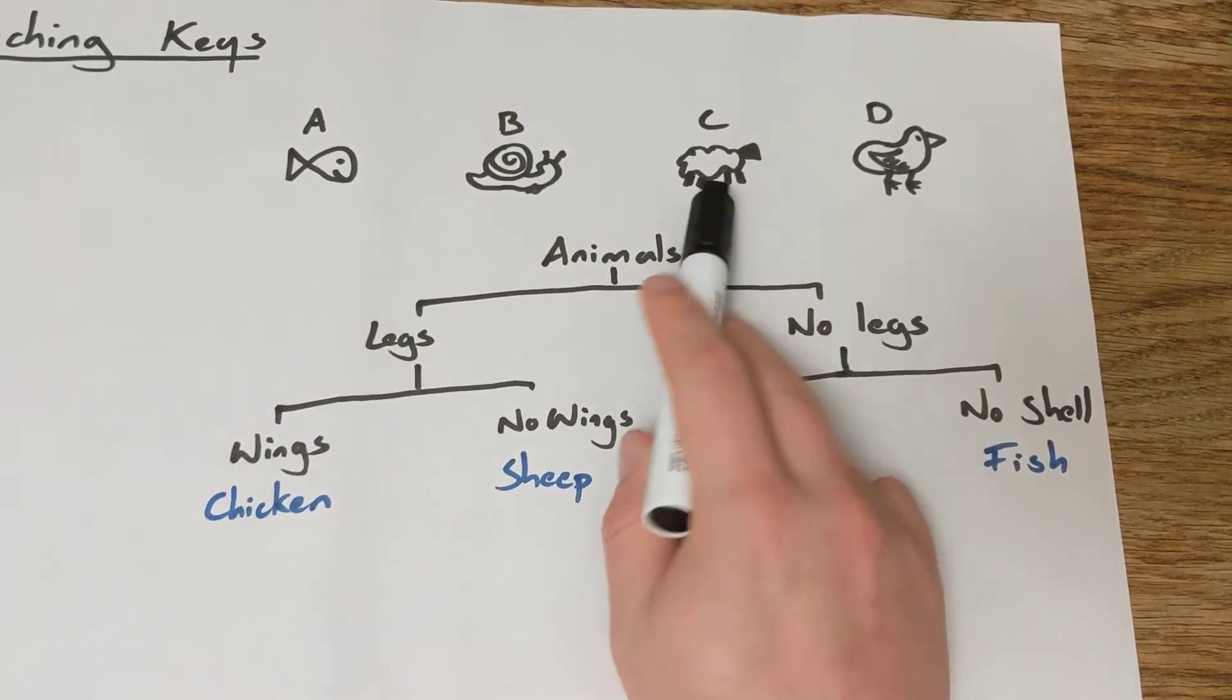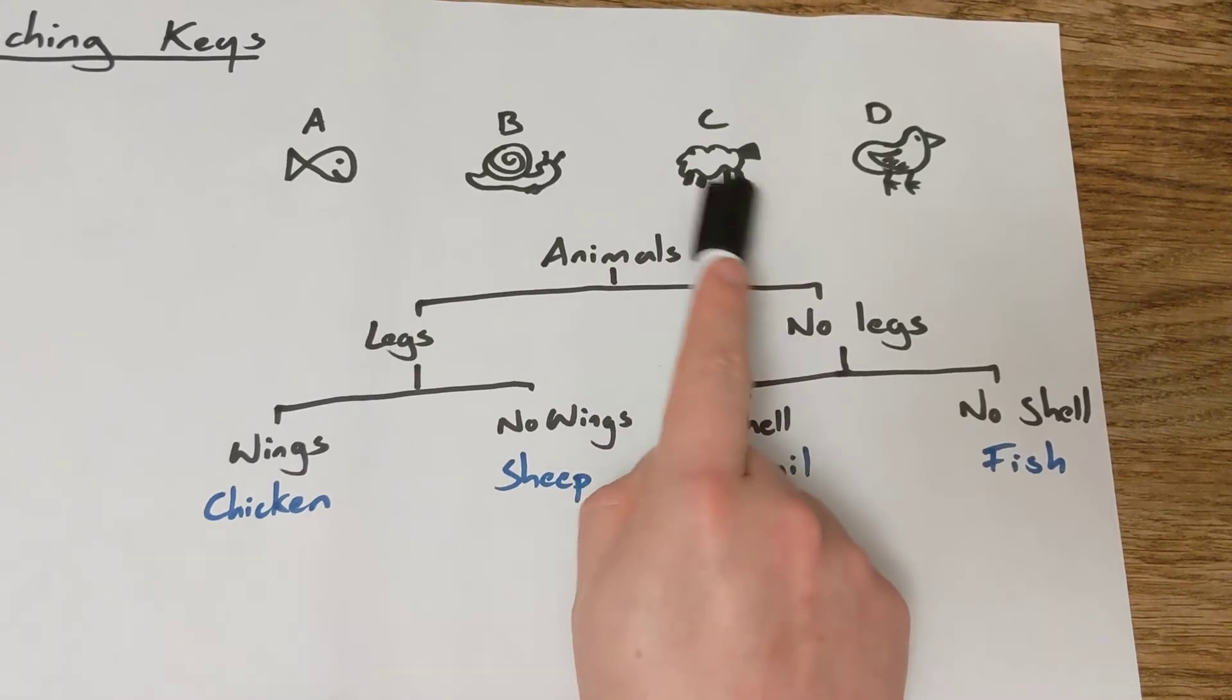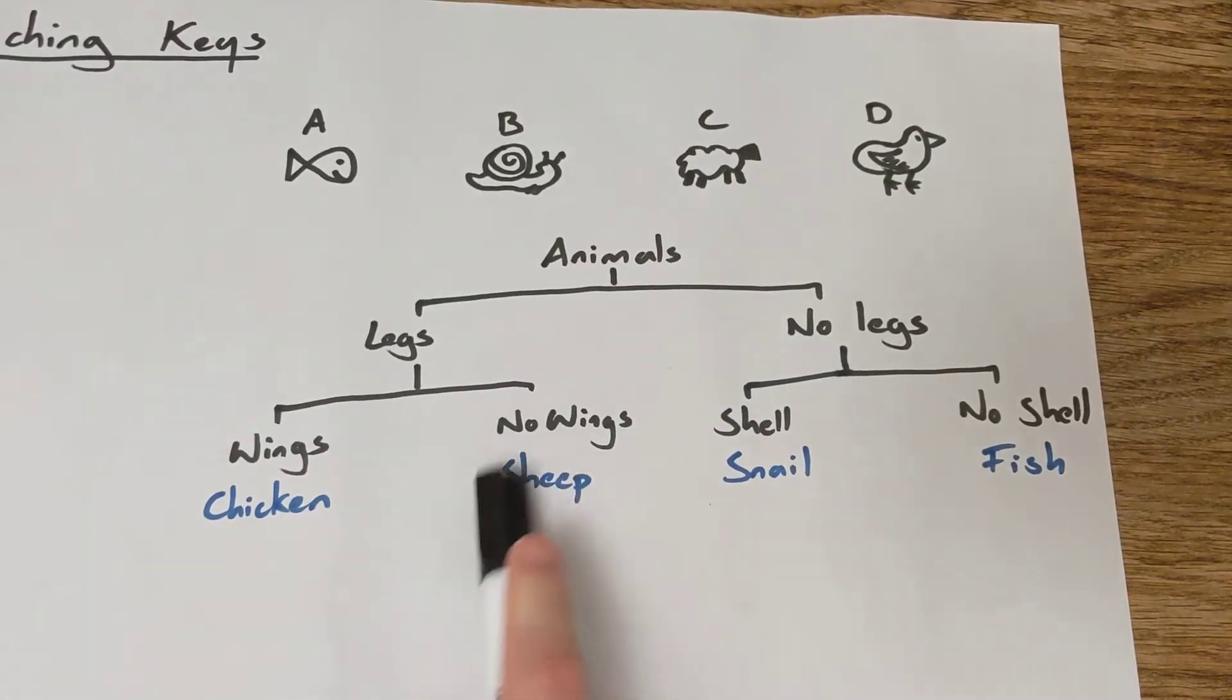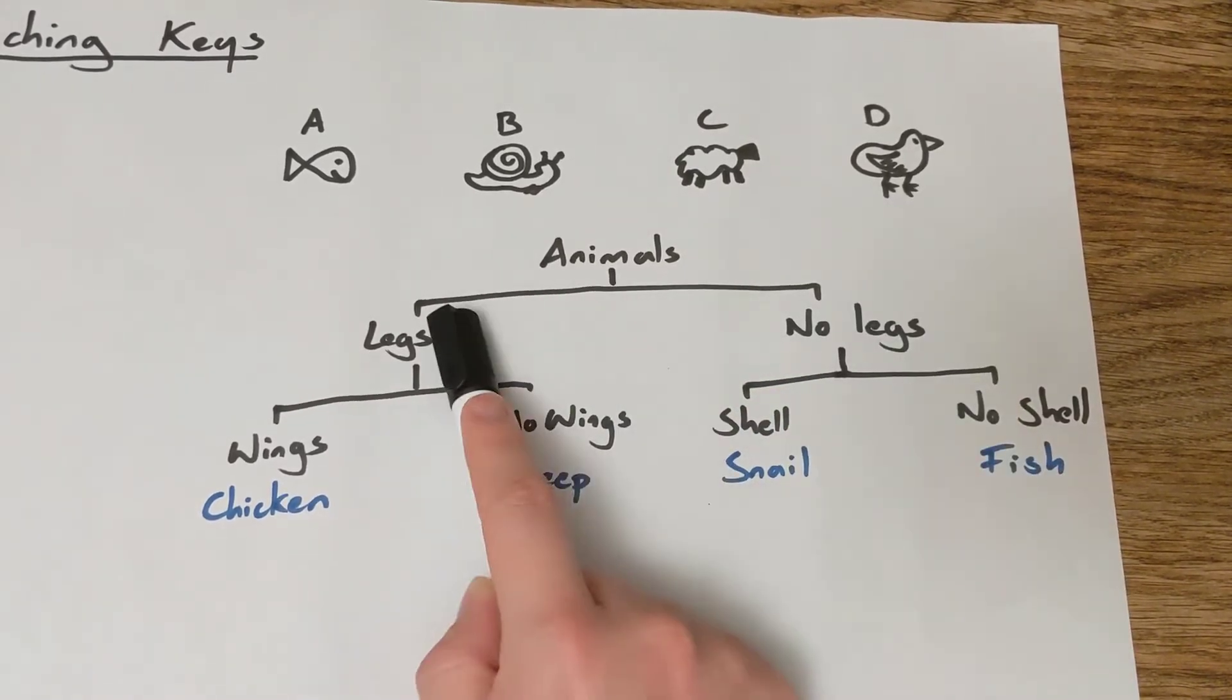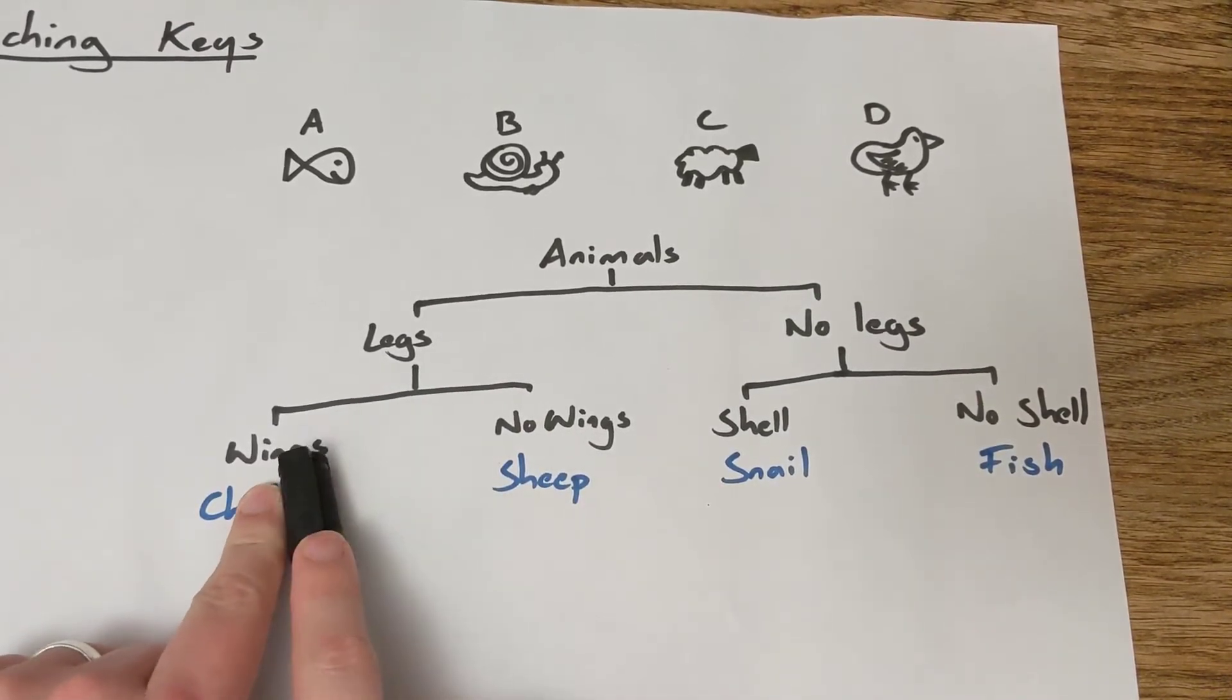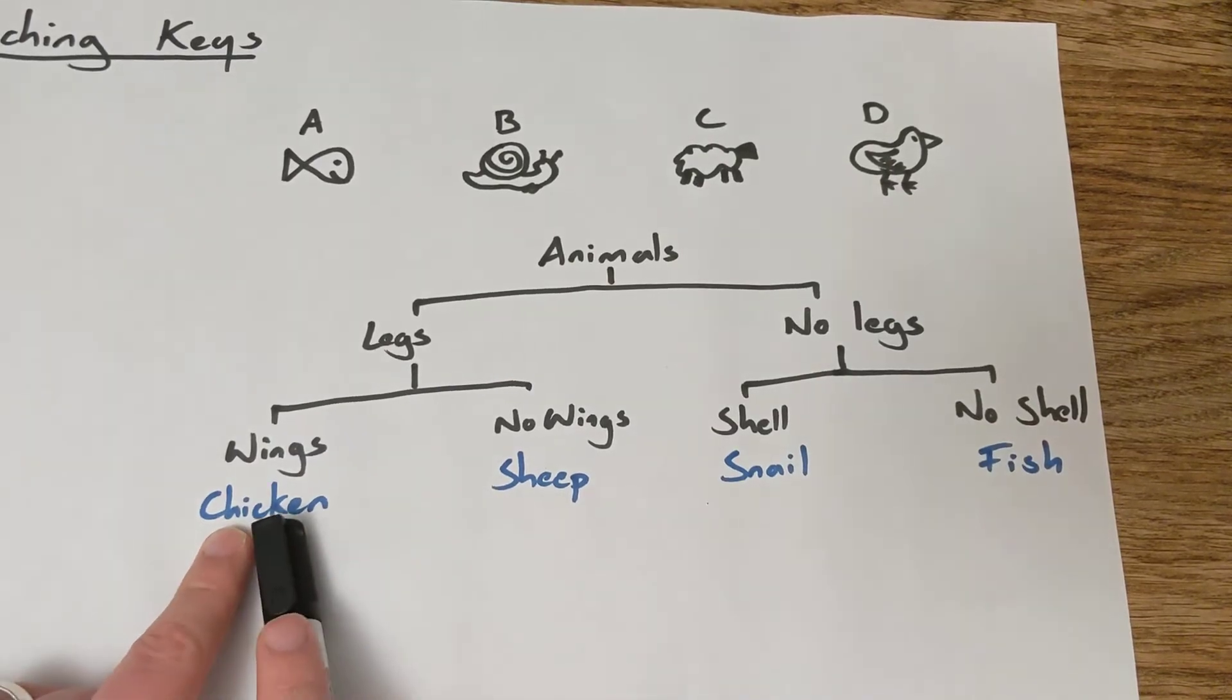So let's look at our next animals and follow through the same process. So C here, legs, no legs. Well, this one has legs. So then our next option is wings or no wings. I know it's not a great drawing, but I don't see any wings on that. So that means no wings. That means C is a sheep. And animal D, does it have legs or no legs? Well, it's got legs. That's what those little scribbles there are. So we come down to this one and we've got that same choice. Wings, no wings. This one does have wings. And so that is a chicken.